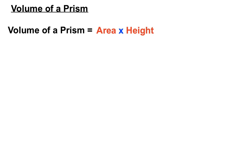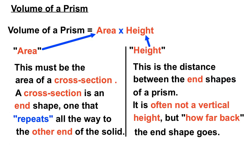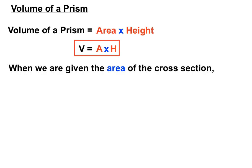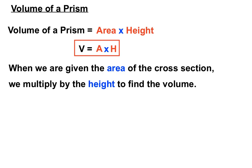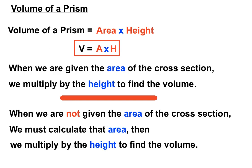So, volume of a prism: area times height. Remember we had to be careful with our definition of area — it must be a cross-sectional area, the area of a shape that repeats all the way to the other end. And height has a slightly different definition too: it's the distance between the two end shapes, how far back that shape goes. When we're given the area of the cross-section, the question is quick. When we're not, we have to work it out first, then multiply by the height.